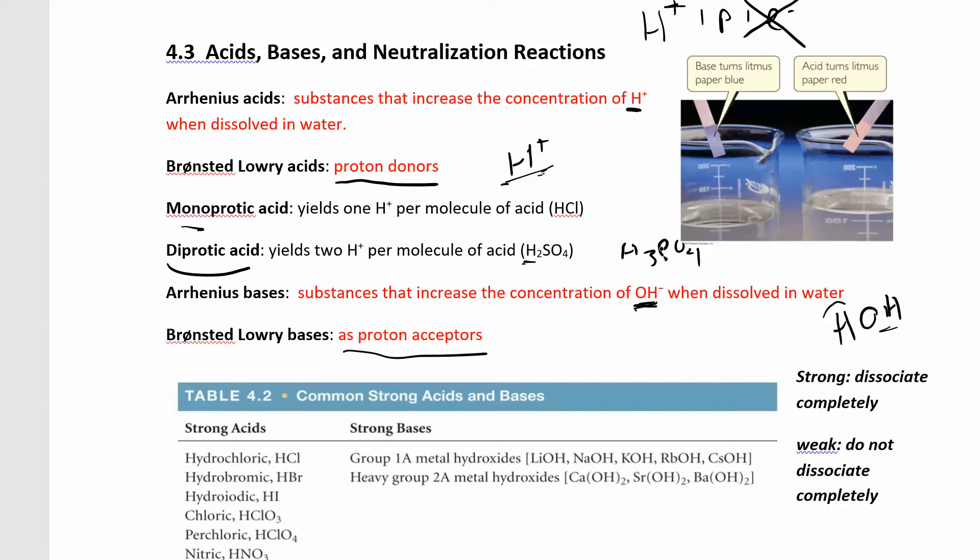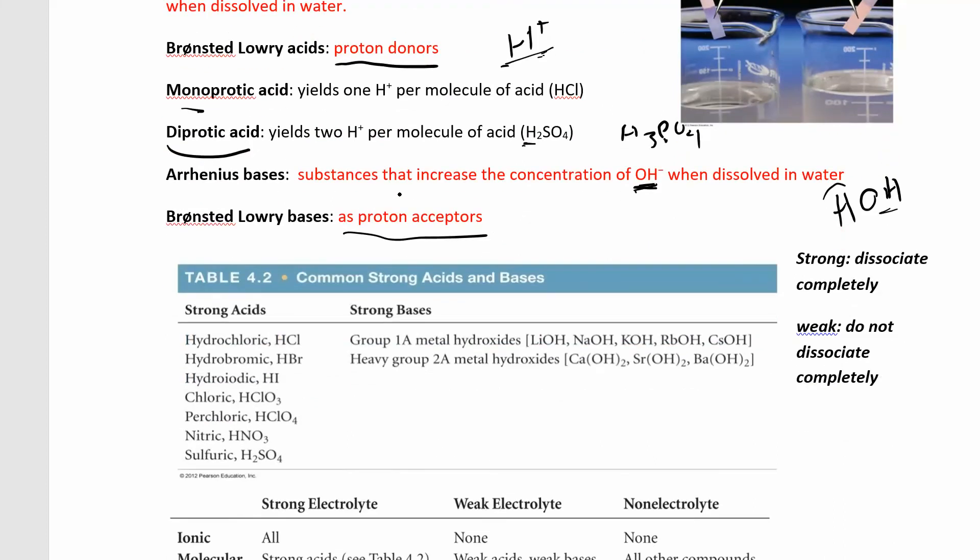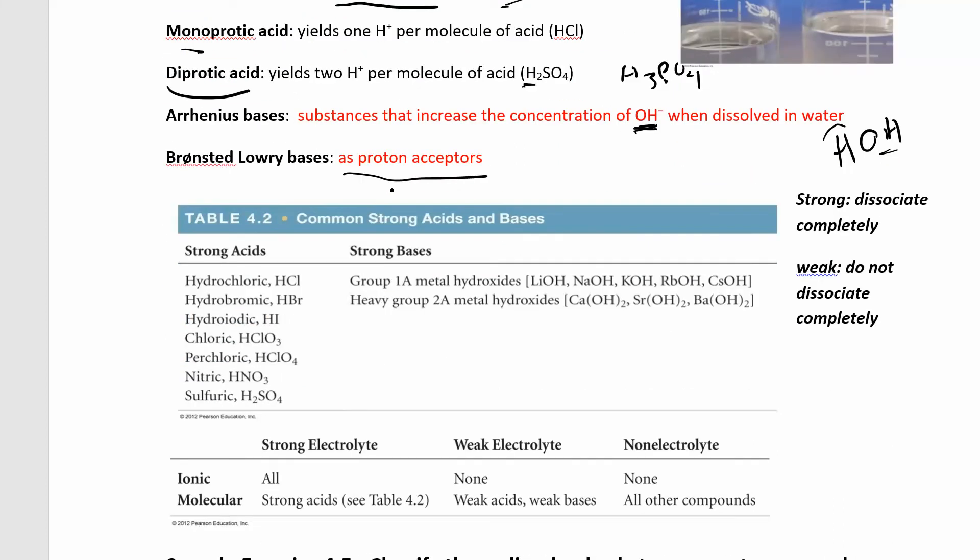Those three hydrogens come off. And so together, those diprotic and triprotic acids, those are called polyprotic acids. We'll look at those again when you get to Chem 2. But for now, we're just looking at acids are things that donate protons, bases are things that accept protons. We have strong acids, we have weak acids, we have strong bases, weak bases.